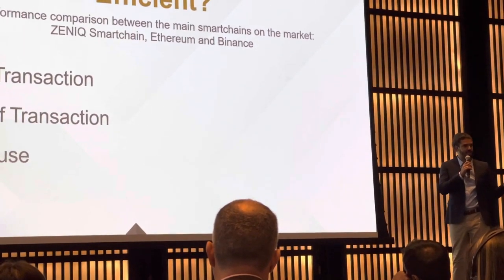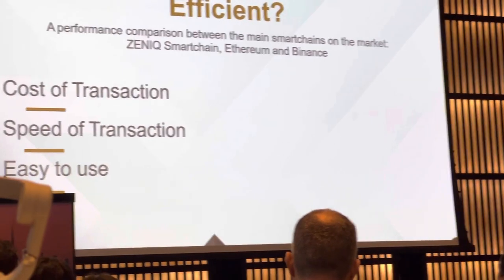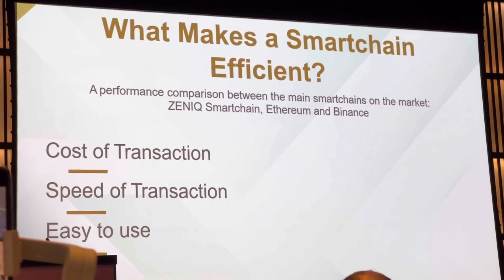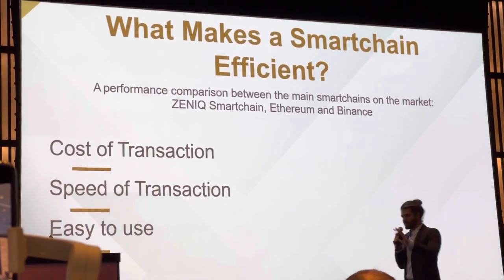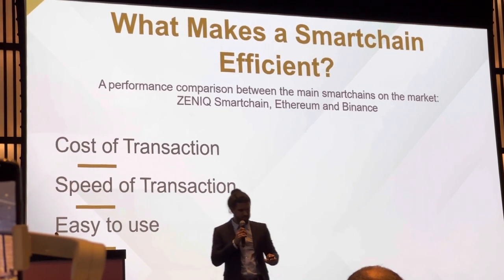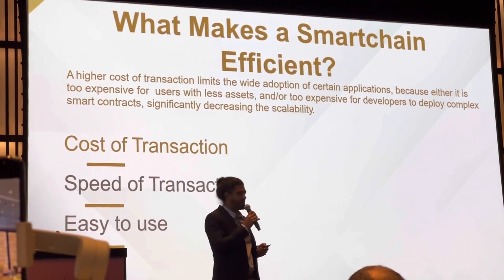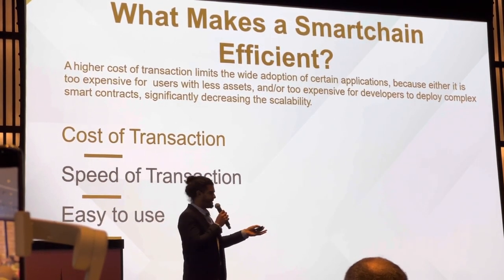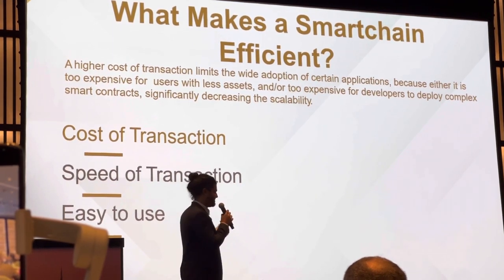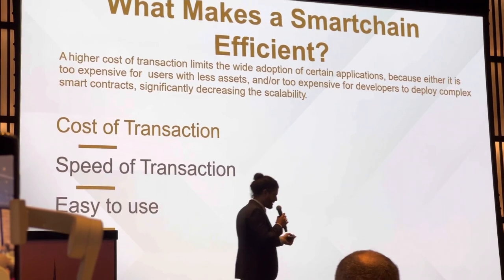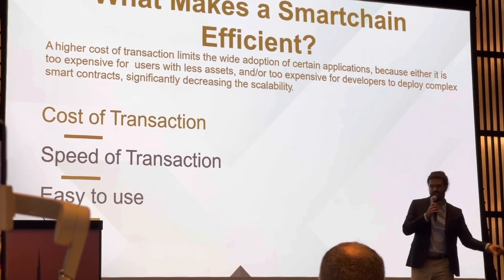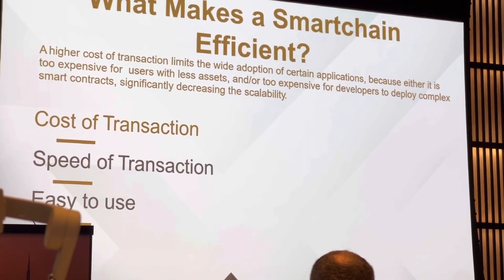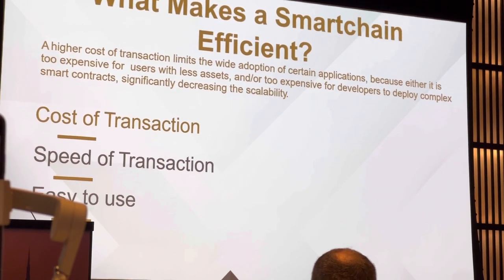Talking about what is performance — what makes a software application have high performance — we have so many technical details about blockchain and smart chains, but we can present this in three main points. First of all is the cost of transaction. It makes no sense to have a very nicely working smart chain if it costs so much that the price I need to pay is way higher than the third party I had before — maybe a lawyer, or the guy working in supply chain, or the aviation officer connecting me to jet owners.